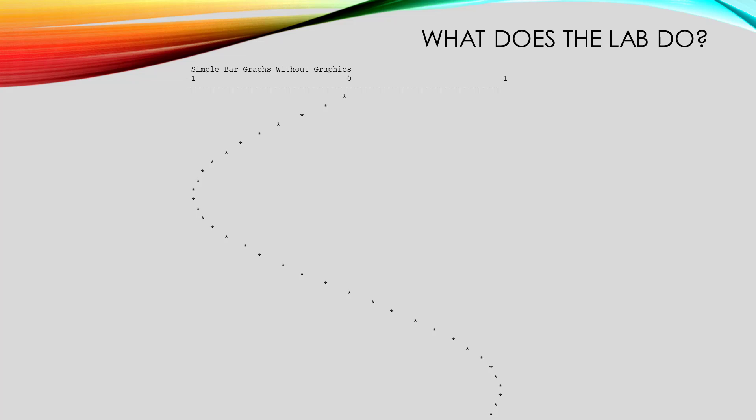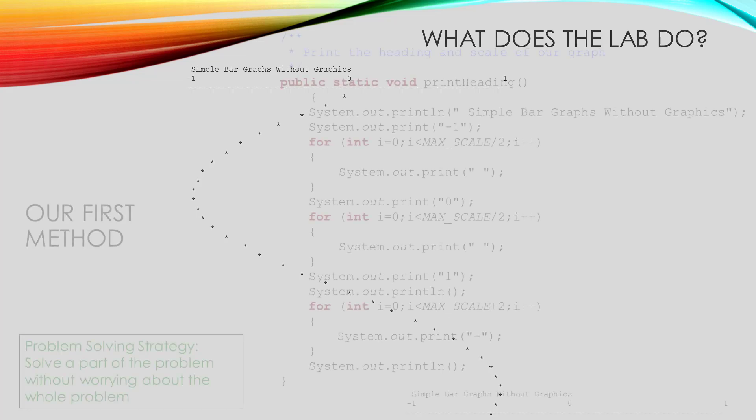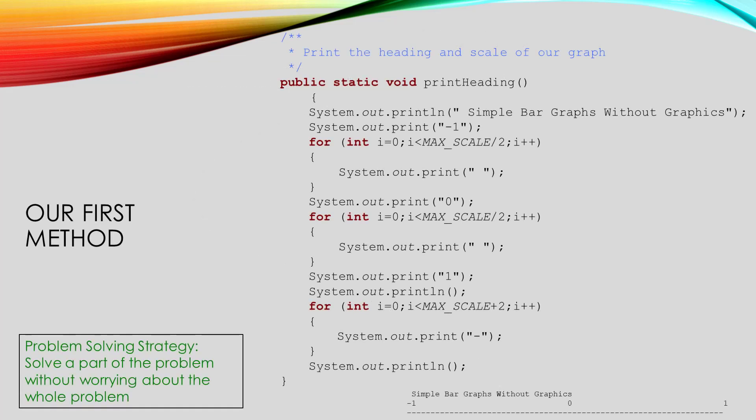If you don't know what the sine function is, don't worry. All you need to know is that it takes a real number as an argument, and looks like this if we give it the number starting at 0 and increasing. That graph is pretty complicated. One strategy to manage that complexity is to solve part of the problem without worrying about the rest of it. So let's start by writing a method that prints out just the heading at the top of the graph.